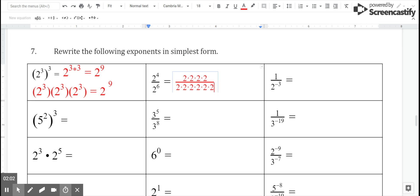So what I'm left with is one over two to the second power, right? Because all of those other twos canceled out.